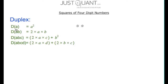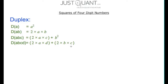For a single digit number, say a, the duplex of a is a squared. For a number with 2 digits, say a b, the duplex of a b is 2 times a multiplied by b. For a number with 3 digits, say a b c, the duplex of a b c is 2 times a times c added to b squared. We have used these 3 duplexes to calculate the squares of 2 and 3 digit numbers. Now to calculate the squares of 4 digit numbers, we also need to find the duplex of 4 digits, say a b c d, which is 2 times a multiplied by d added to 2 times b multiplied by c.